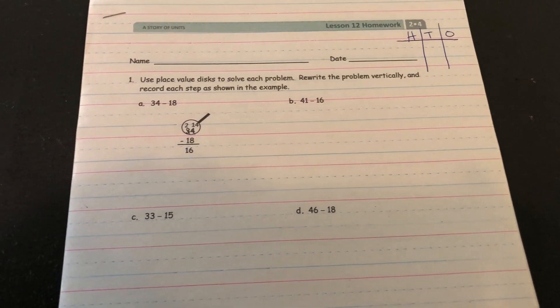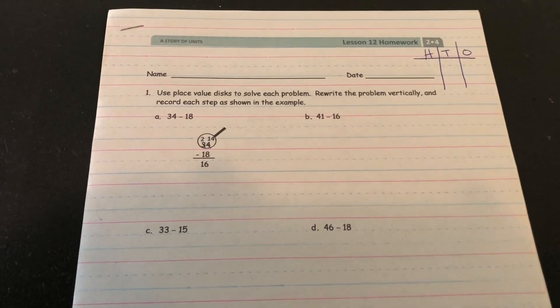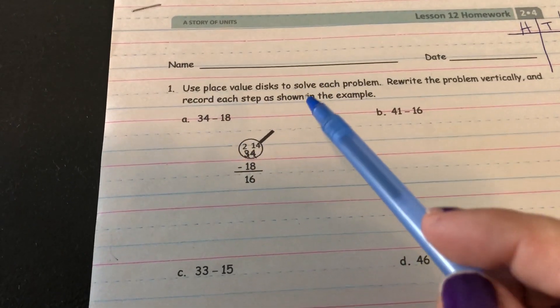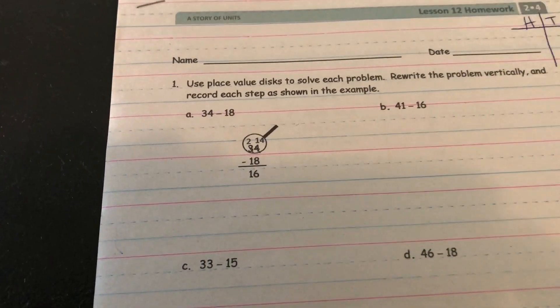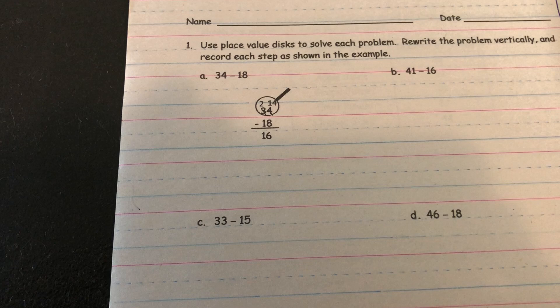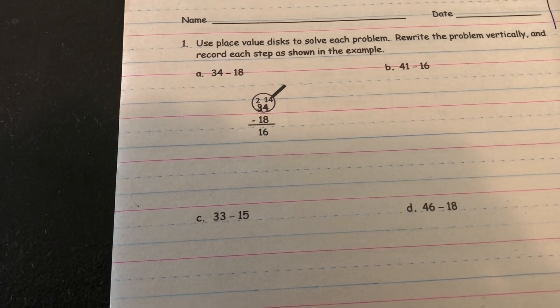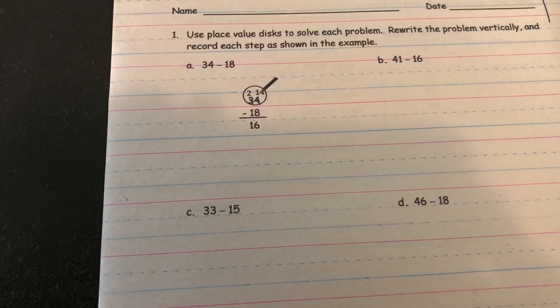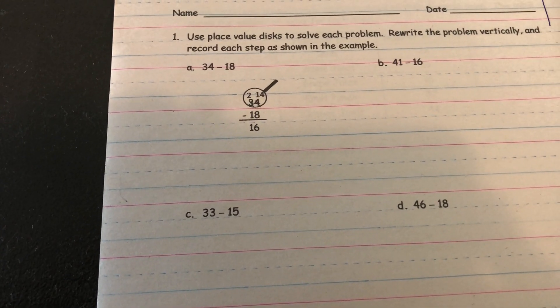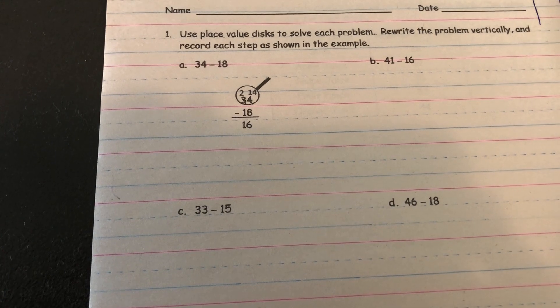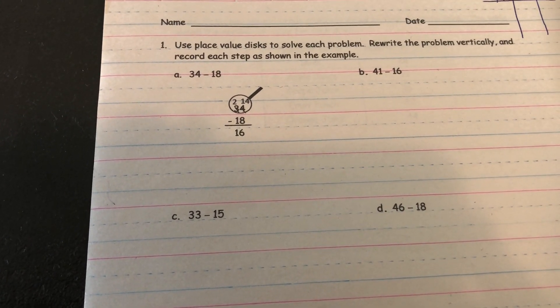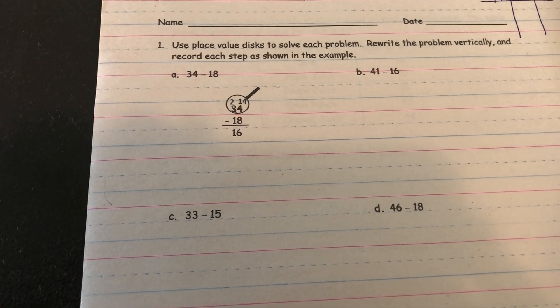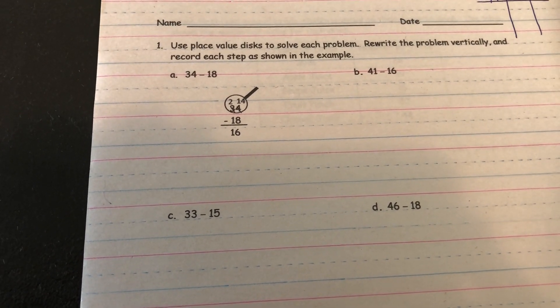Alright, so the first one has been started for us. It says 34 minus 18 and they started by putting it in vertical form. So they wrote 34 and then directly underneath it they have minus 18. And you'll see that they put the magnifying glass around the 34. All that magnifying glass means is that they want you to look really close at 34 before you start subtracting.